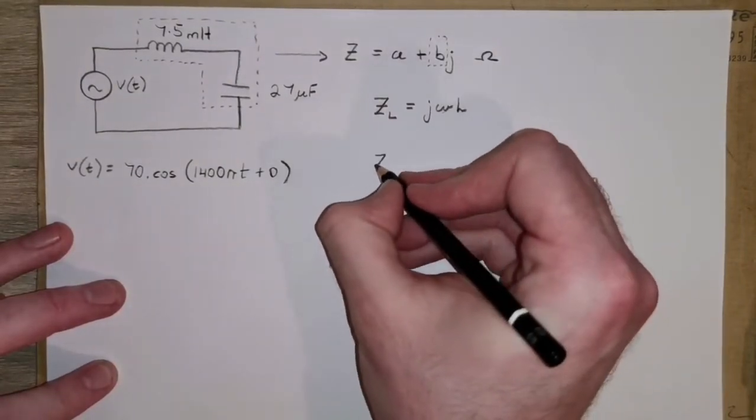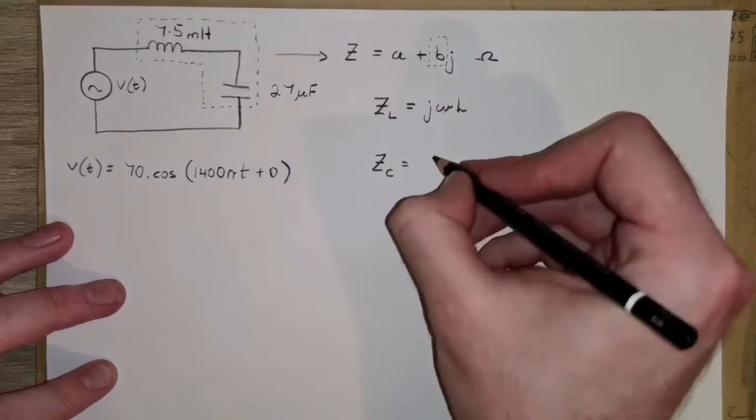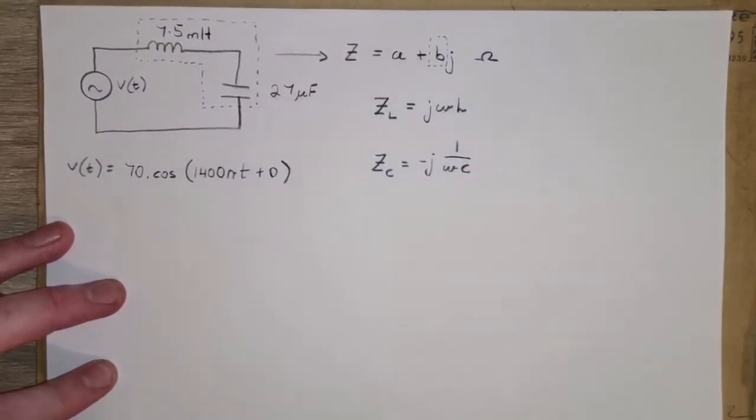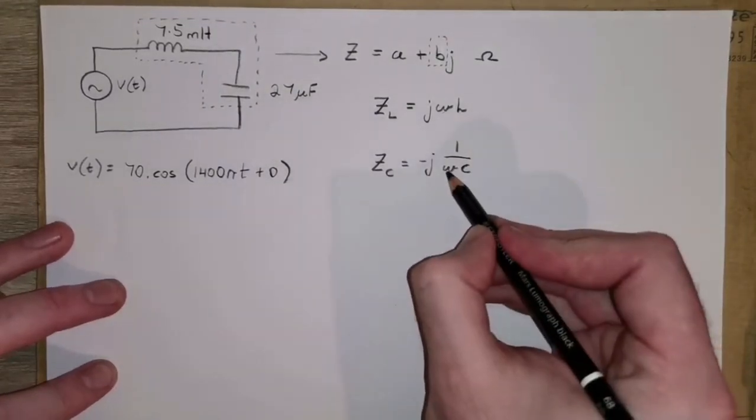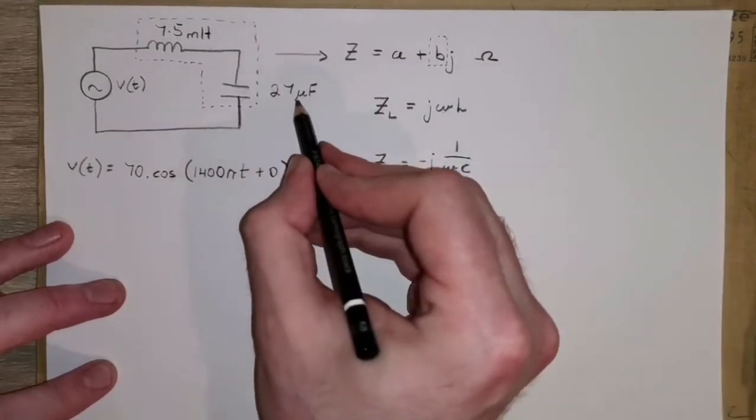And we'll also need to work out the impedance of the capacitor, which is minus j, 1 over omega C, where again that's the frequency in radians per second, and this is the capacitance given here.